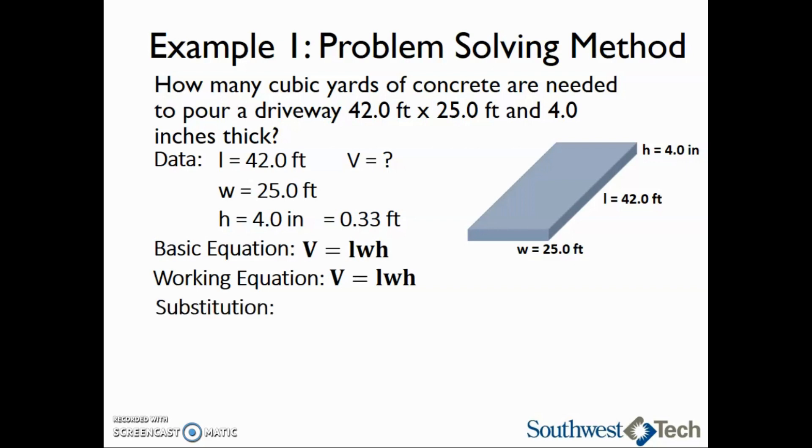Step seven is the substitution step. We will substitute 42 feet for L, 25 feet for W, and 0.33 feet for H. When we multiply in step eight, we get 346.5 cubic feet. We will only need two significant digits in our answer because the height only has two significant digits. This means the volume of concrete is 350 cubic feet.